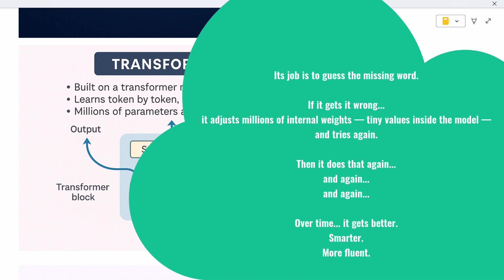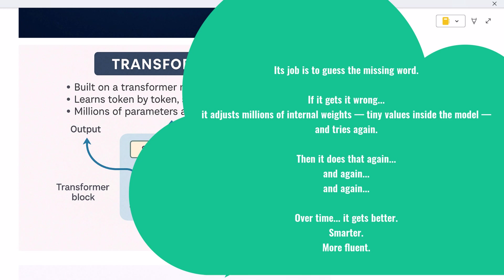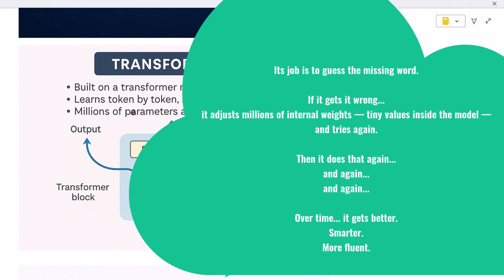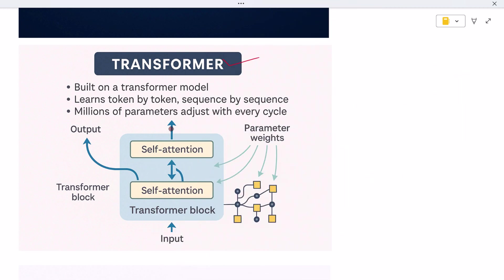Then it does that again, and again, and again. Over time, it gets better, smarter, more fluent. That's how it builds its understanding, word by word, token by token.